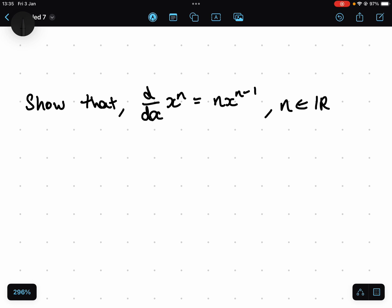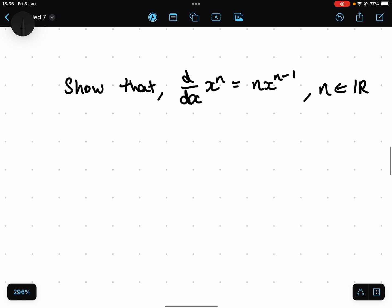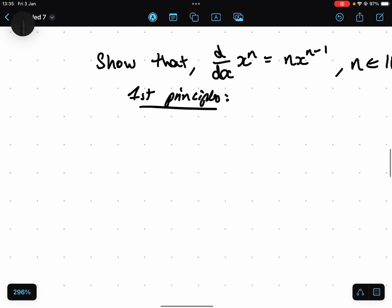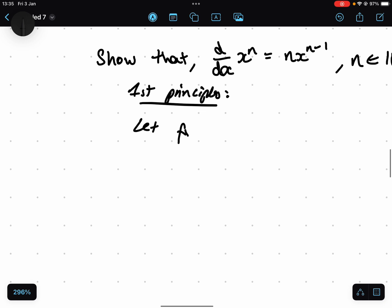So the first thing I'm going to do is we're going to use first principles. If you're doing any kind of differentiation proof, you use first principles most of the time. If something like this, you can use first principles. So let's just let f(x) equal x to the n.